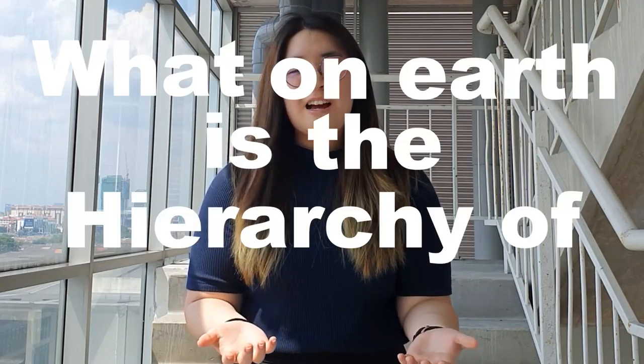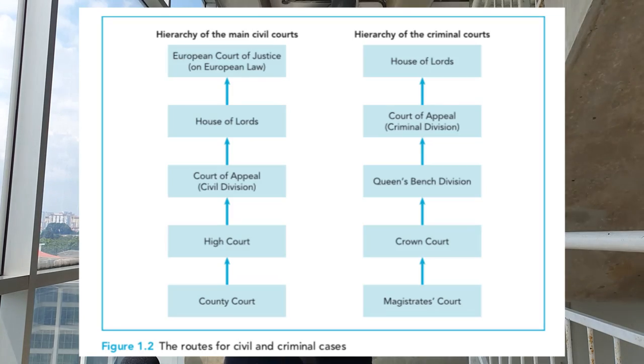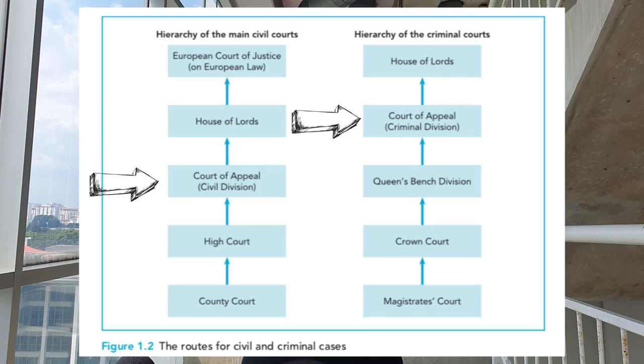Currently, the way in which a court decides on a case depends on where it sits on the hierarchy of courts. The hierarchy of courts refers to the age-old court structure of the English legal system. We have the House of Lords, the Court of Appeal, the High Court, the Crown Court, and the County Court and the Lay Magistrates.